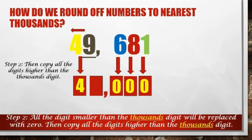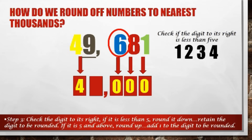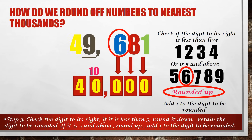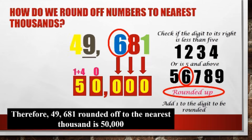Now, how about the digit we need to round off? To determine if we keep the same digit or increase it by 1, we check if the digit to the right of the underlined digit is less than 5 (1, 2, 3, 4) or exactly 5 and above (5, 6, 7, 8, 9). Since the digit is 6, we add 1 to the thousands digit: 9 plus 1 is 10. Since the answer is two digits, 0 will be in the thousands place and 1 will be added to the ten-thousands digit. Therefore, 49,681 rounded off to the nearest thousand is 50,000.